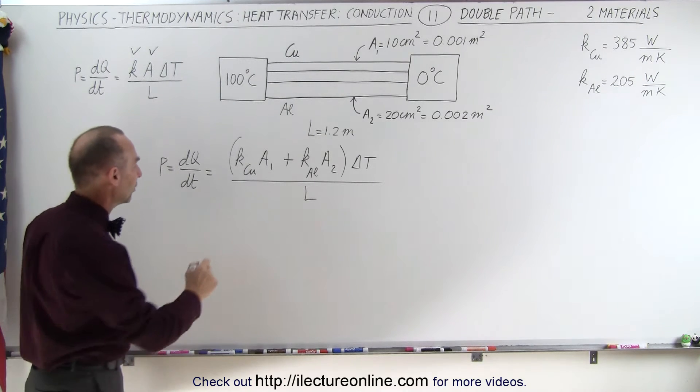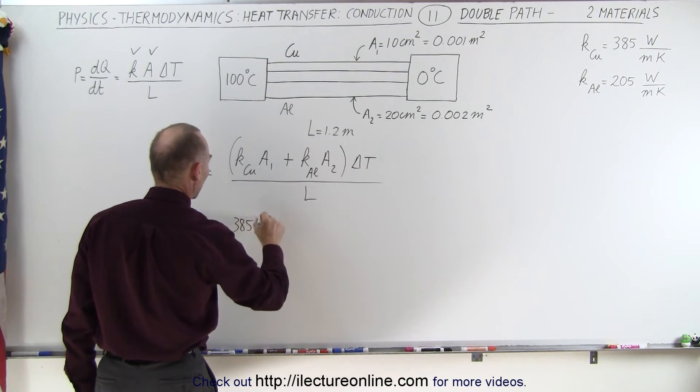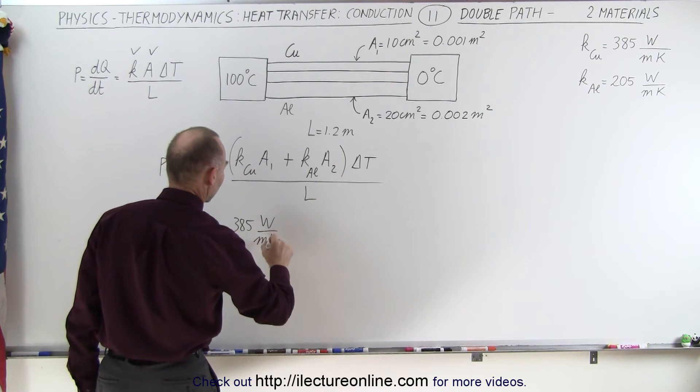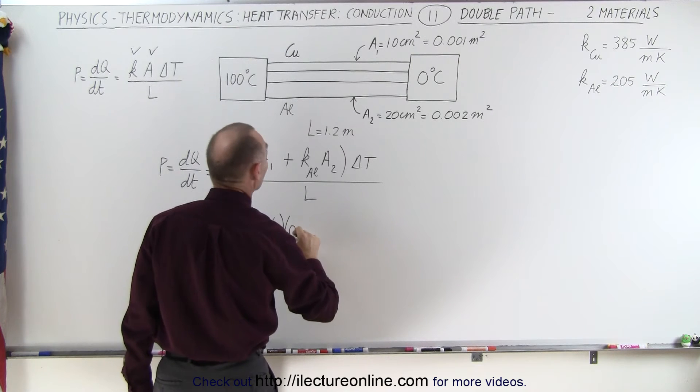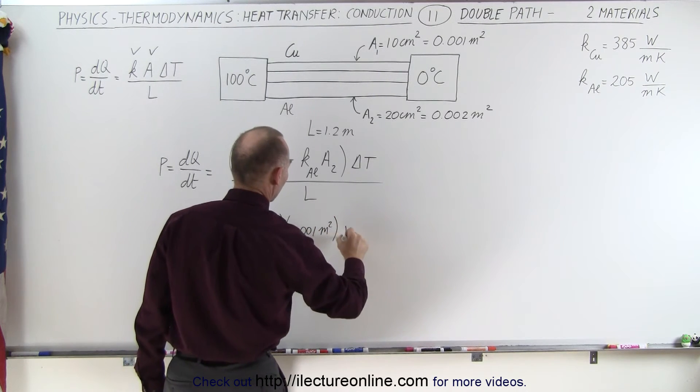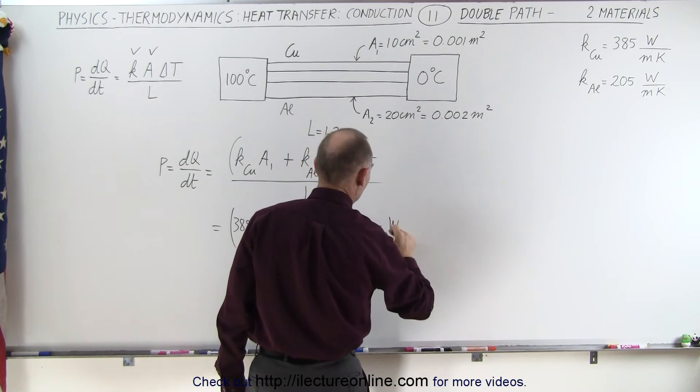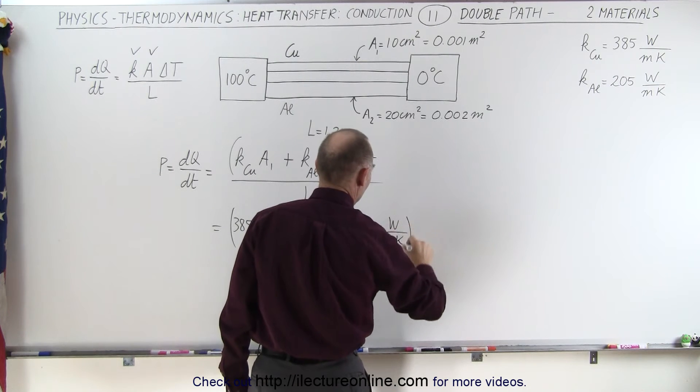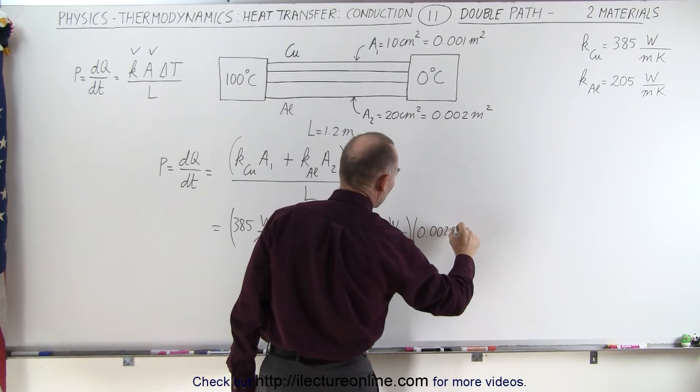Now, when we plug in the numbers, we get the following. So that would be 385 watts per meter times Kelvin, multiplied times the cross-sectional area, 0.001 meter squared, plus the conductivity constant for aluminum, 205, and multiply that times the cross-sectional area, which is 0.002 meters squared.